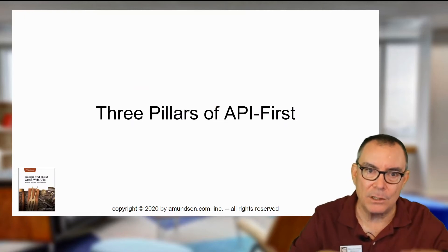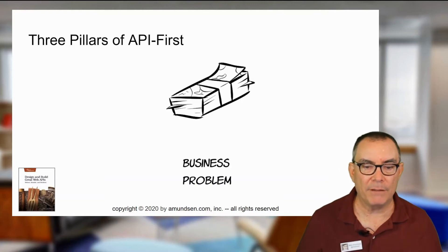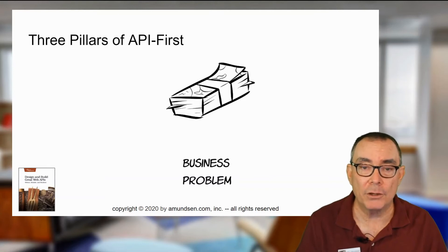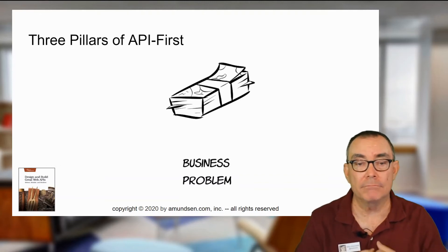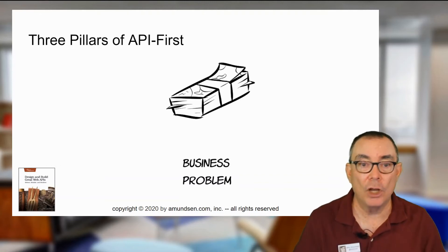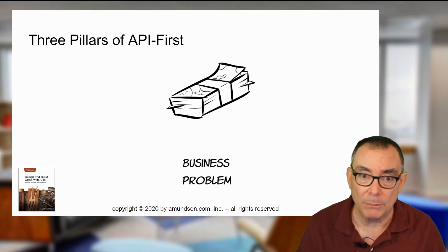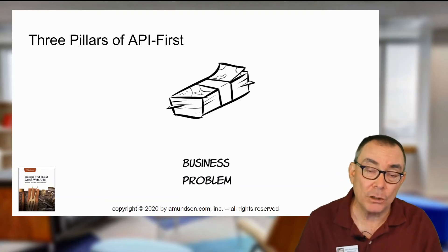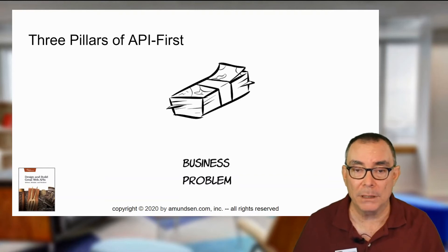That leads us to the three key pillars that I talk about in the book of API first. The first one is the business problem: what are you trying to solve, and what is this API supposed to be doing? Whether you're working in an enterprise, on the open web for millions of possible users, or just working on a project on your own, you're trying to solve a problem. Make sure you know what it is you're trying to solve before you start building that API.